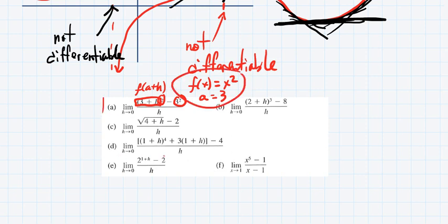What about 1d? So look at this big thing right here. a is actually easy to pick out. What's a? 1. Very good. What's f of x then? x to the fourth plus 3x. Yeah. See that?